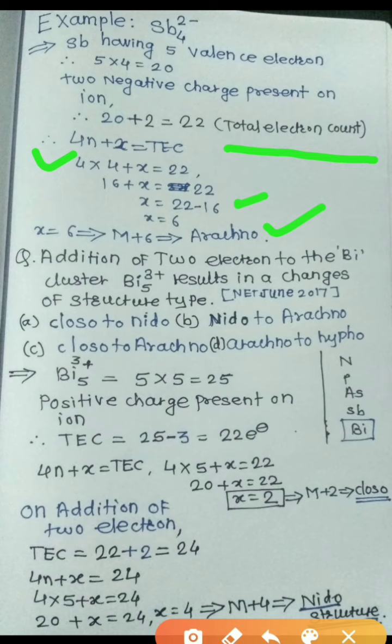First, find the structure type of Bi₅³⁺. Bismuth has 5 valence electrons, so 5 × 5 = 25. Three positive charges are present on bismuth, so subtract 3 electrons from the total electron count. We get 25 − 3 = 22 as the total electron count.